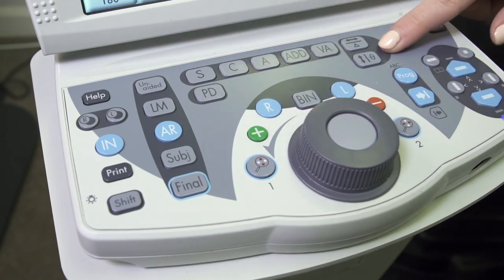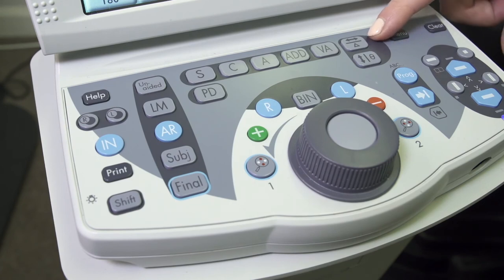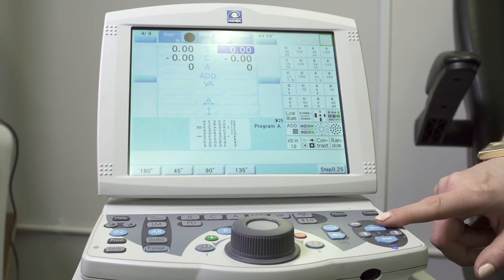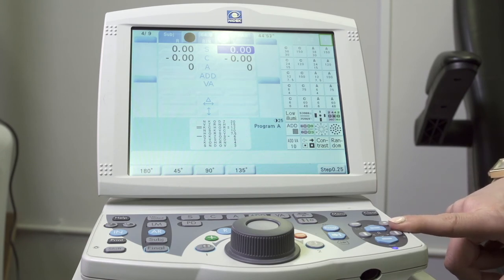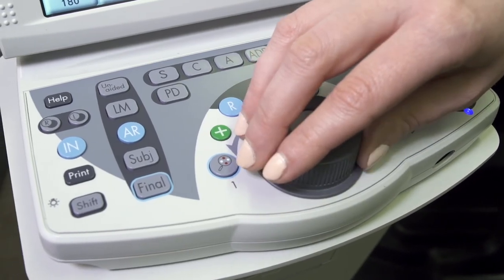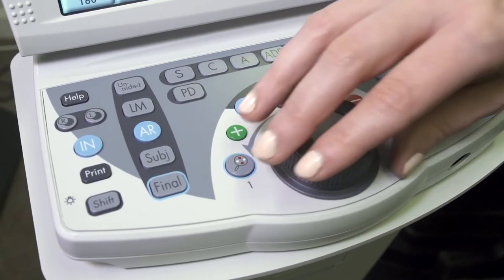On the far side of the panel just here, we're able to use these buttons to mask and isolate different lines and letters. The dial here allows us to wind up and down in 0.25 steps.